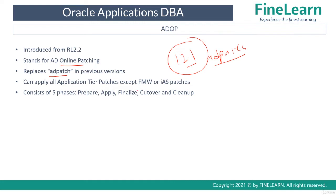ADOP can apply patches on the application tier, except for Fusion Middleware or IAS components — such as the web tier, WebLogic, and Oracle homes like Oracle Common and IAS 10.1.3 home. All these homes and directories cannot be patched using ADOP. ADOP only applies application tier patches — that is, patches related to products and families such as Financials, HR, AD, and DXK.